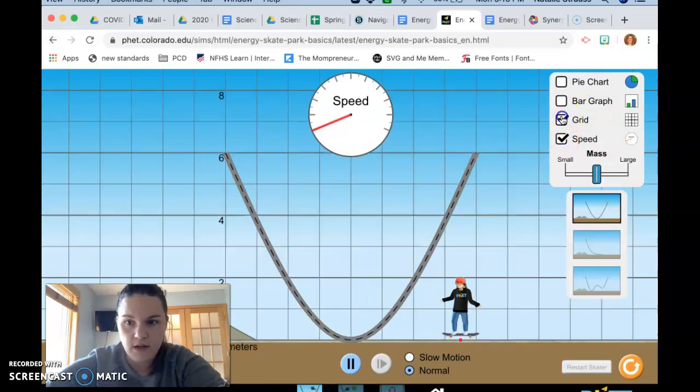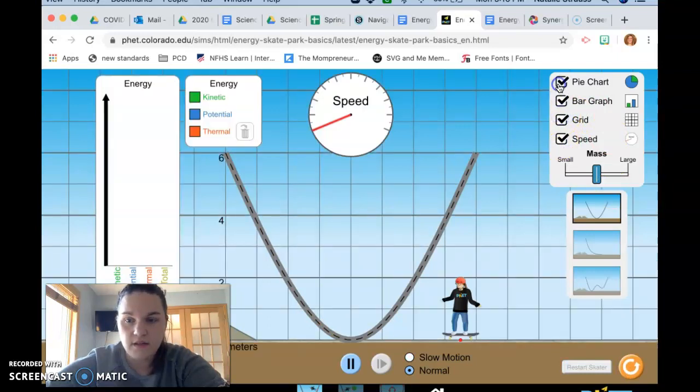You're going to want to then turn on all of these little things. So you can see our different coordinates here. I'm going to put the skater down. You have the two, the four, and the six. So that would mean three, five, one on the grid. You'll need to know those for the assignment and then you're just going to play around with that.